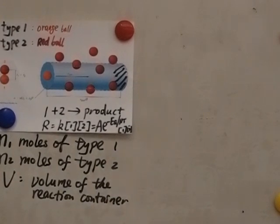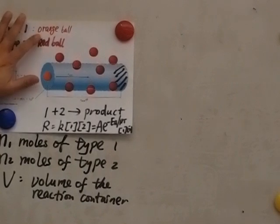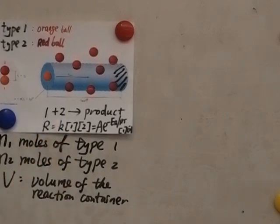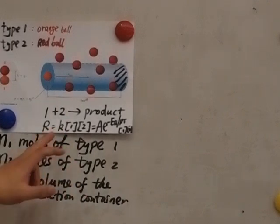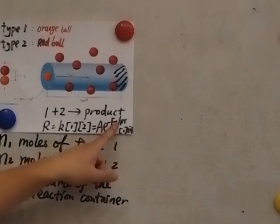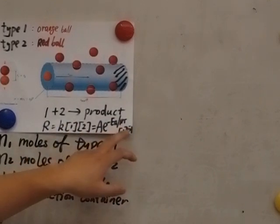I will use the collision theory to derive the reaction rate for this reaction. Type 1 molecule reacts with type 2 molecules and forms product. The reaction rate is simply k, the reaction rate constant, times the concentration of 1 times the concentration of 2. And the reaction rate constant k is equal to — here's the Arrhenius equation — the pre-exponential factor times the exponential function e to the power negative activation energy over RT, again times the concentration of 1 and the concentration of 2.